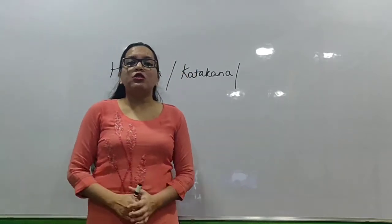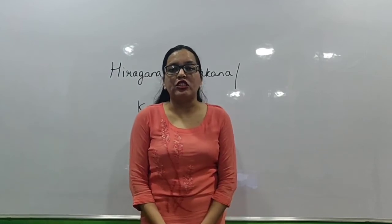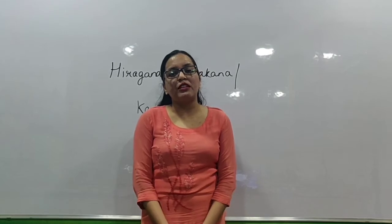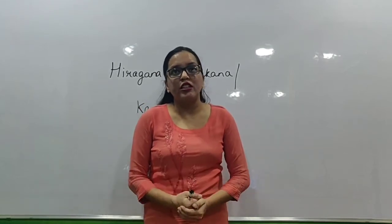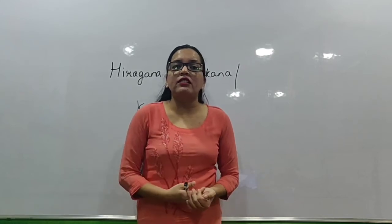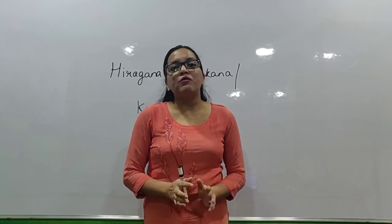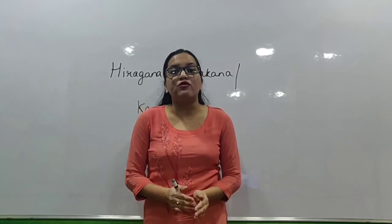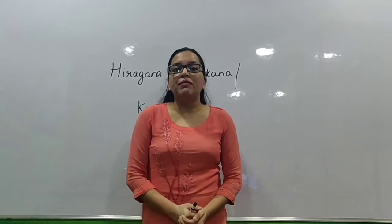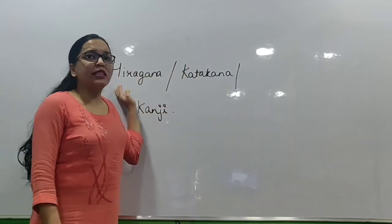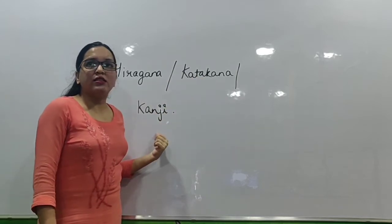Before starting with the language training, we need to know what is there in the language. Japanese language comprises of three main scripts. Just like we started learning English or Hindi by learning the language scripts, today I am going to explain what is there in Japanese language. The three main scripts are: Hiragana, Katakana, and Kanji.